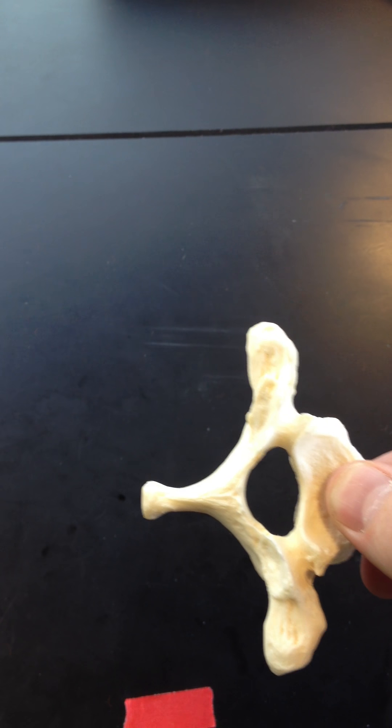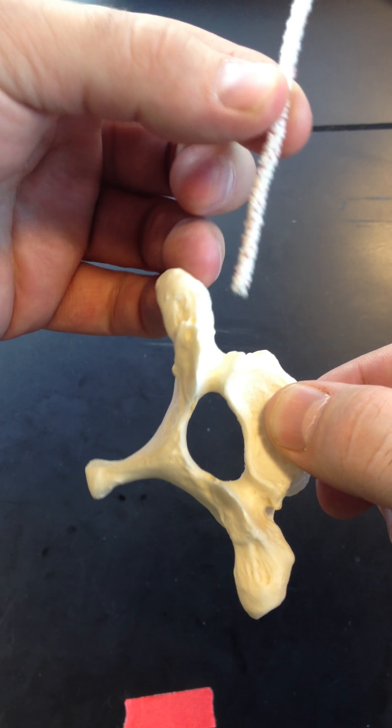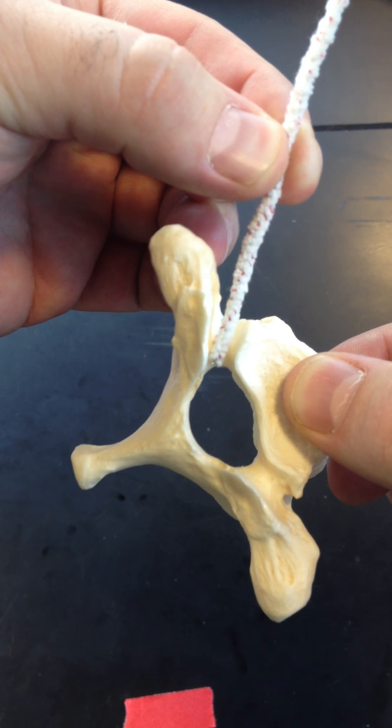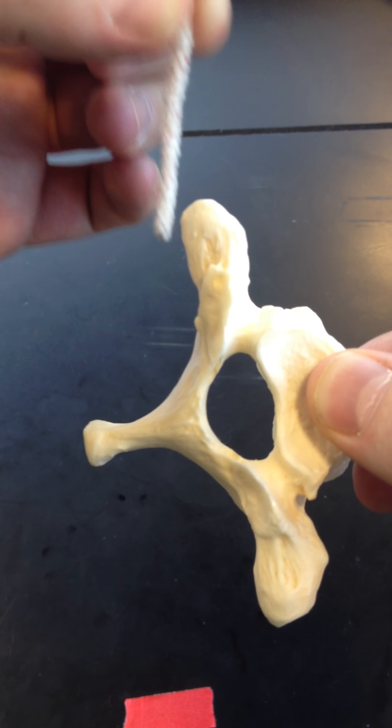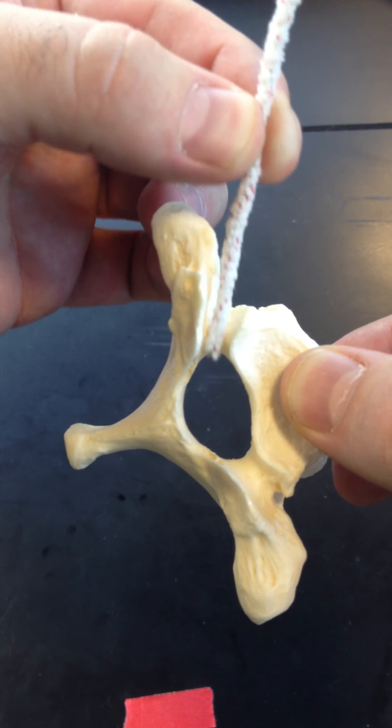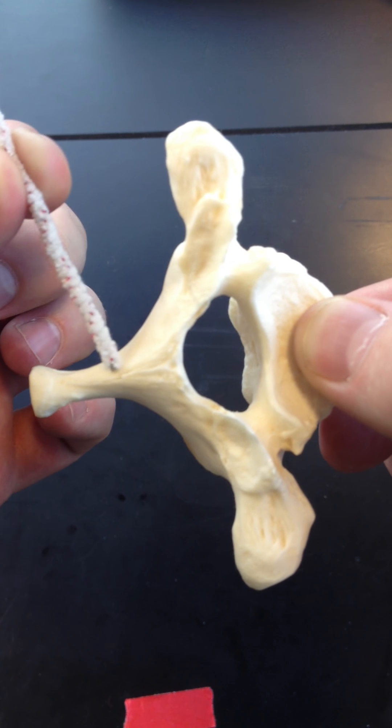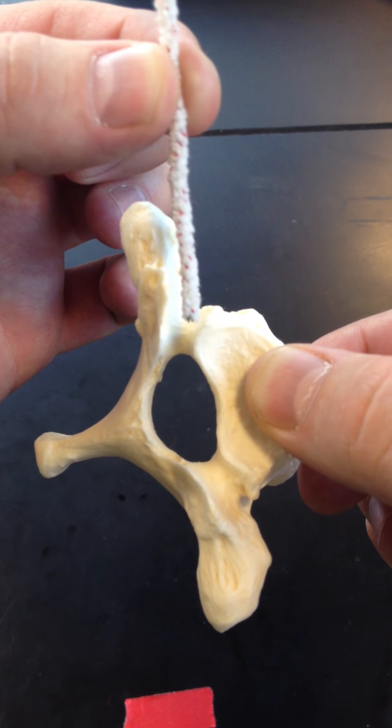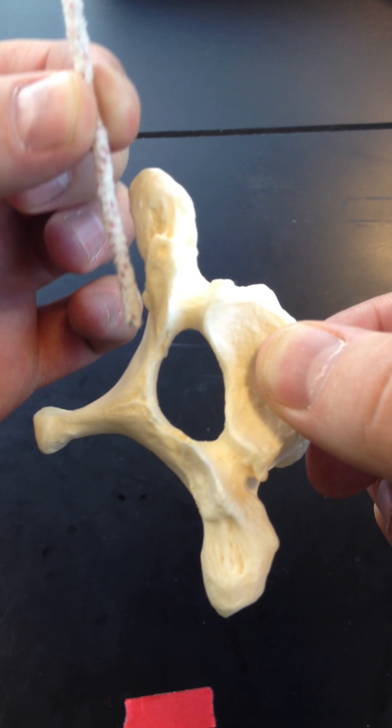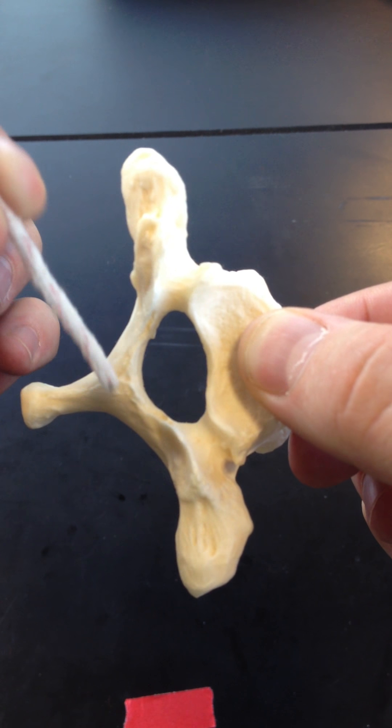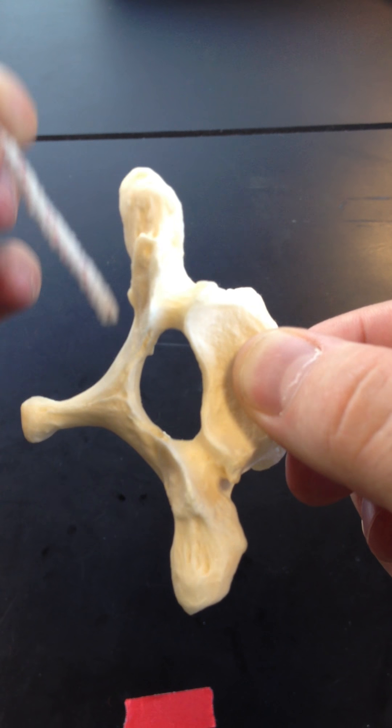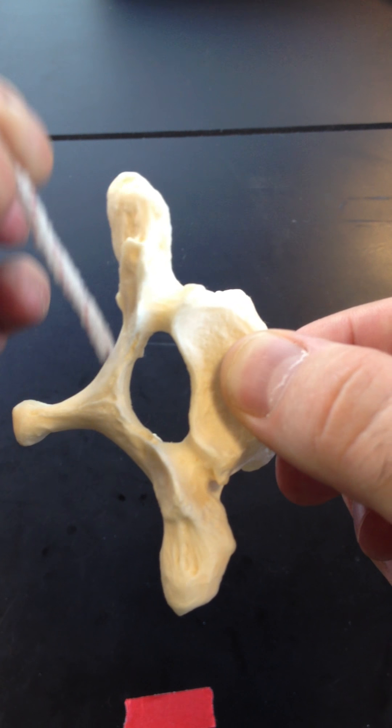We've still got some of the same basic features that we talked about in the cervical region. So between body and transverse process is the pedicle. Between transverse process and spinous process, lamina. And then as we move from pedicle all the way to lamina and spinous process and back, this whole area is our vertebral arch.